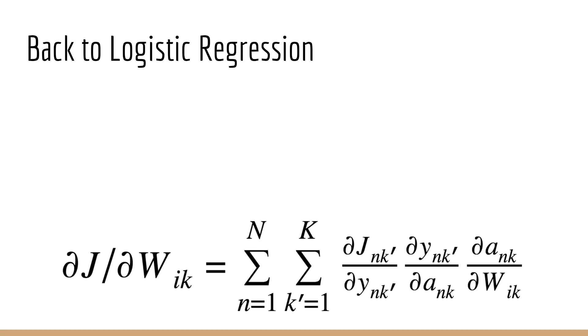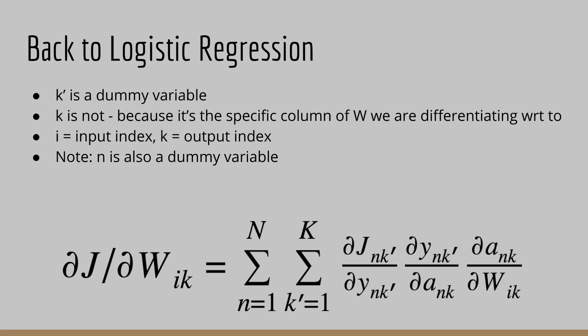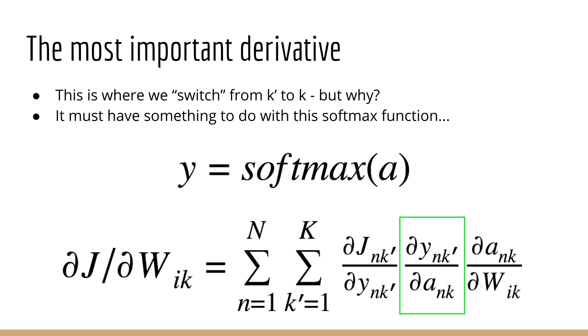So going back to our chain rule expression, the dummy index used for the summation is k prime. It cannot exist outside the summation. The k that we have on the left is not a dummy index, and it refers to the output index of the weight w. So i represents the input index and k represents the output index. Notice also that n is a dummy variable. It exists inside the summation, but it's not allowed to exist outside the summation.